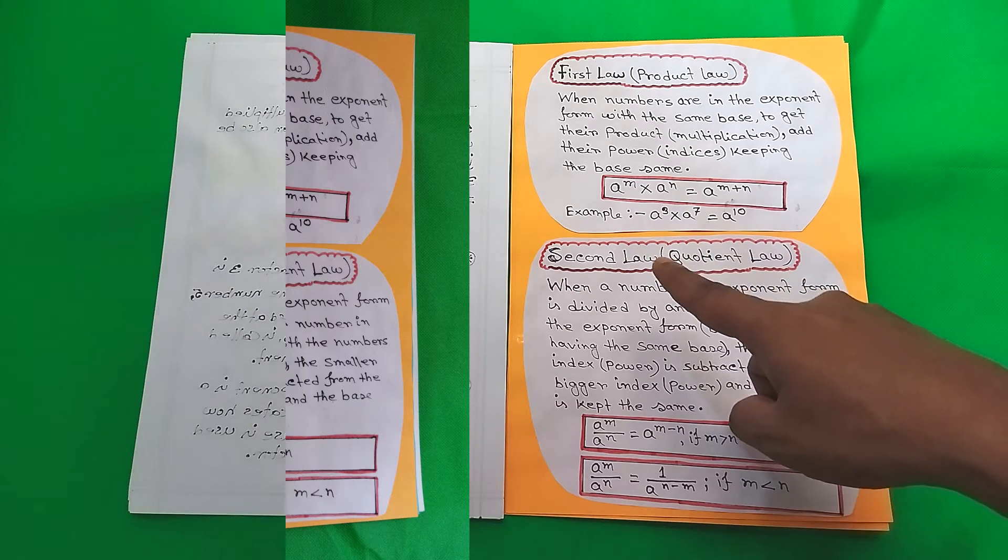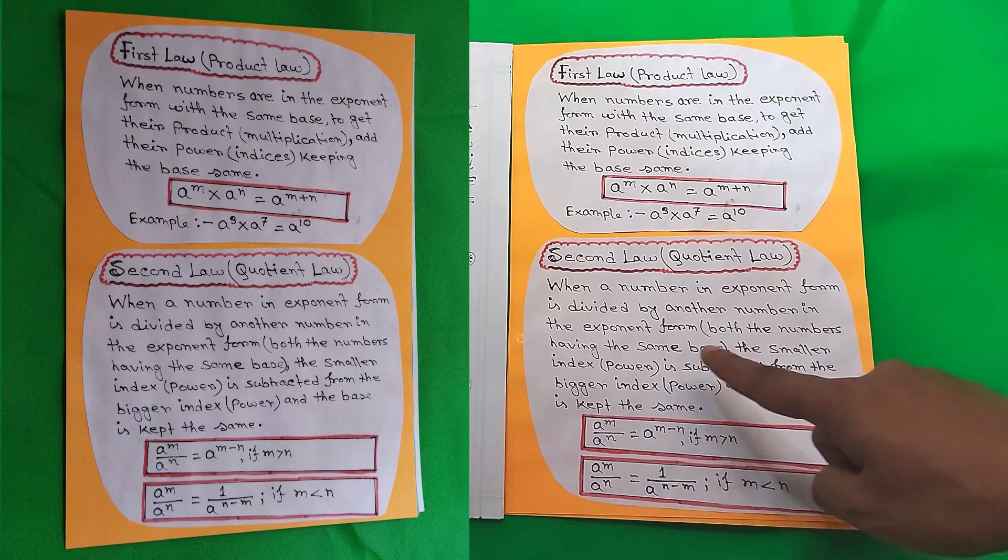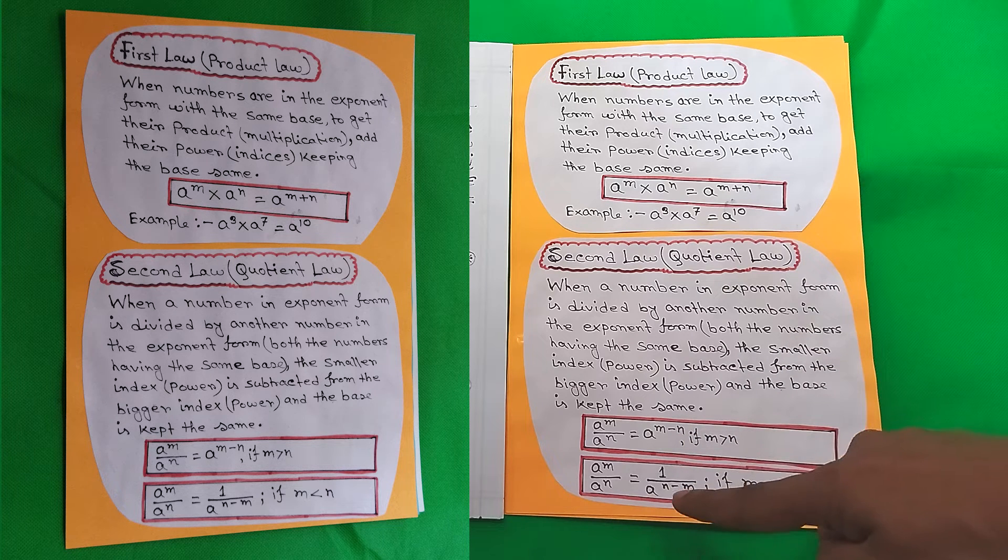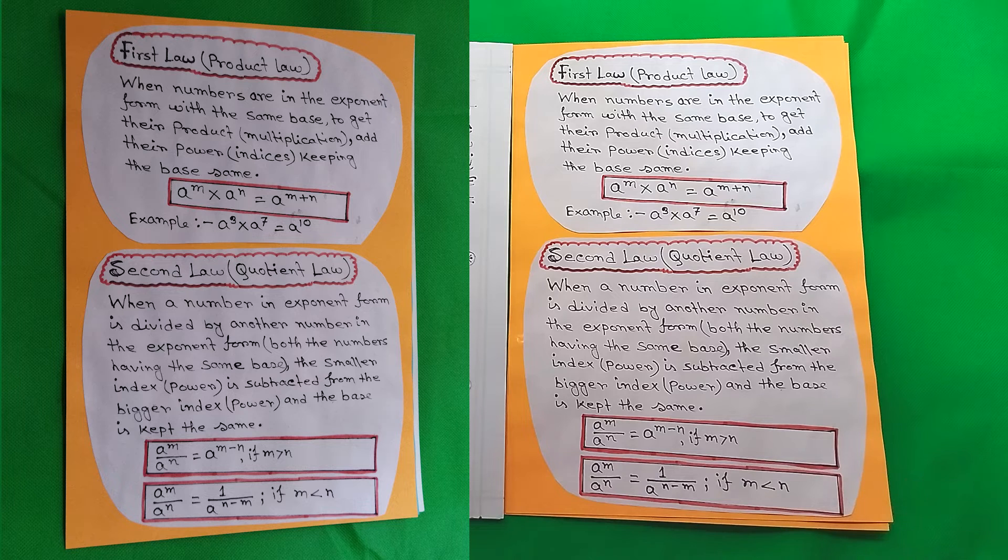Here is the second law, the Quotient Law. The description is written here. The formula is a to the power m divided by a to the power n equals a to the power m minus n, if m is greater than n.